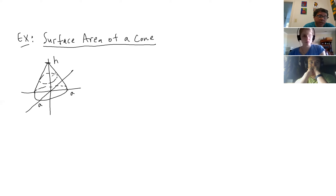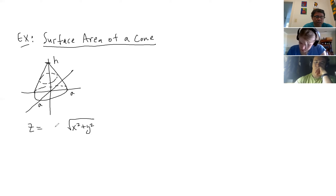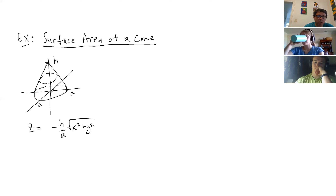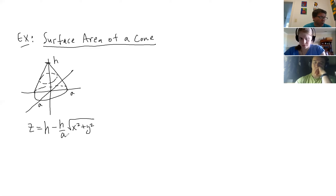The equation we get from the previous section — section 10.1 — is z equals, well, we're going to find the bottom cone, so it's the negative square root: z = -( h/a)√(x²+y²). That's the cone scaled so it's h high and a across. Then I want to shift it up — if you add a number to the z equation, it moves it along the z-axis, just like a regular shift.